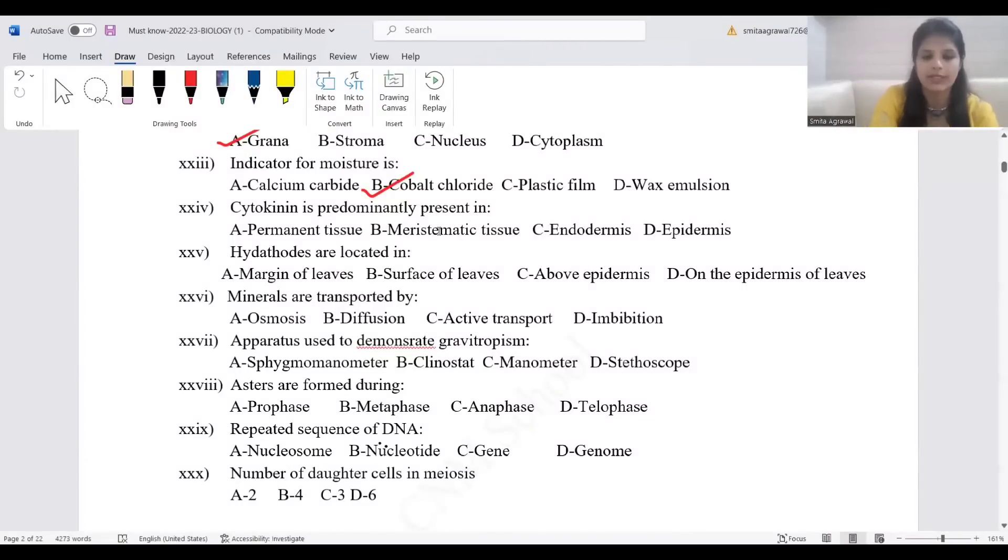Cytokinin is predominantly present in meristematic tissue, because C for cytokinin, C for cell division, that is possible at the meristematic tissue only.